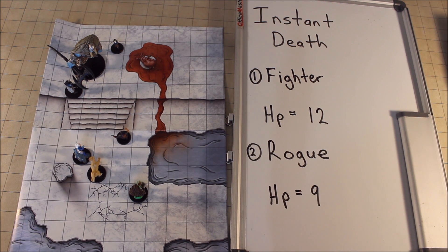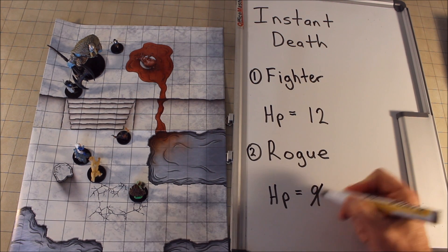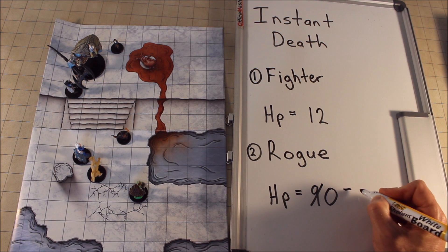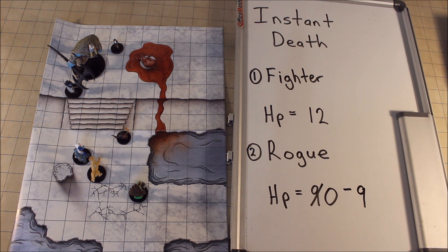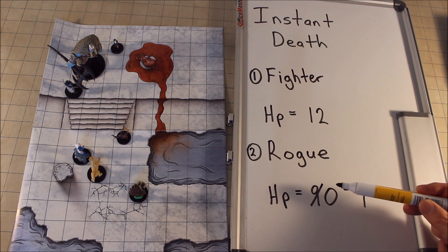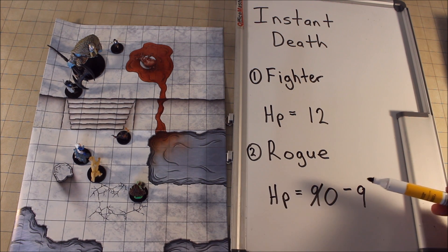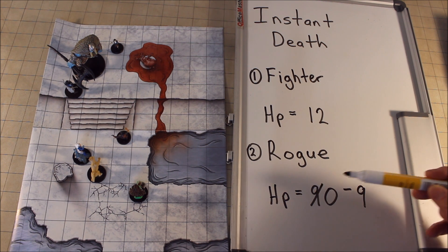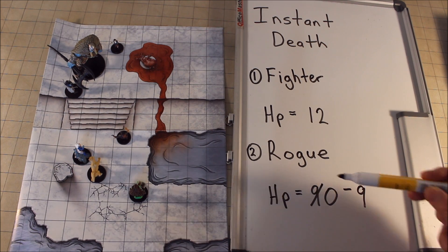We deduct 18 from 9, which brings it down to zero but there's damage left over. Because it did 19 points of damage it would go down to negative 9. We don't usually track negatives in 5e, but for the purpose of instant death we do need to figure that out. The rogue had 9 total hit points — the damage dealt reduced it to zero, and the remaining damage reduced it to the negative value of its total maximum hit points.